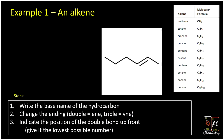Example one: a simple alkene. I've broken down this process into three steps. First, we want to write the base name for the hydrocarbon — all that means is we're going to count the carbons. One, two, three, four, five, six. When we have six carbons, remember that gives us hexane. So we're going to name that hexane. And then step two says change the ending. Because we have a double bond, we're going to drop those last three letters and change it to hexene.